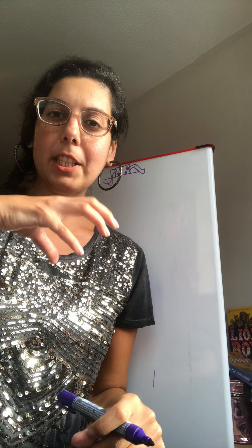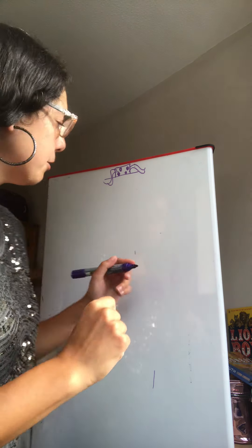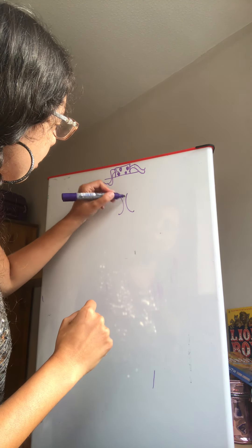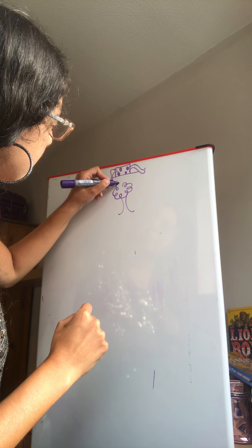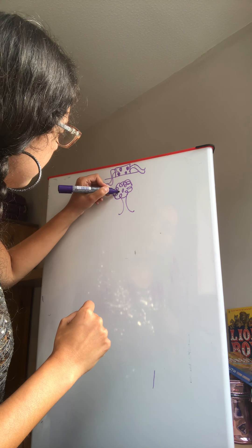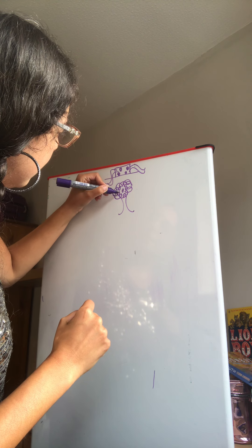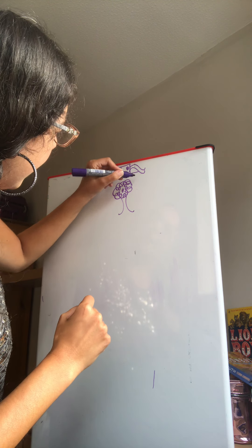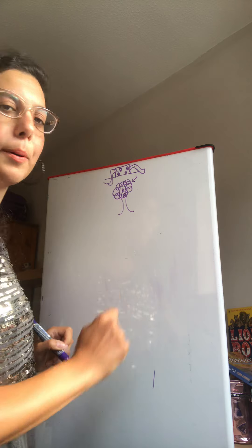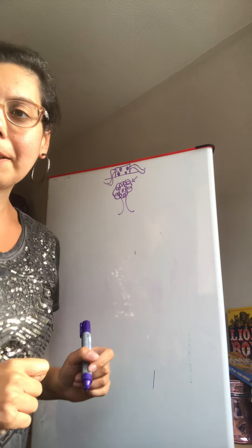On top of the crumpety tree. That's the first line — on top of the crumpety tree. So what I'll do is I'll draw the crumpety tree with these little crumpets inside, and I'm going to point my arrow on the top. On top of the crumpety tree.